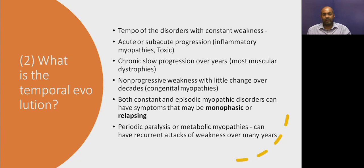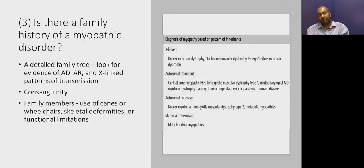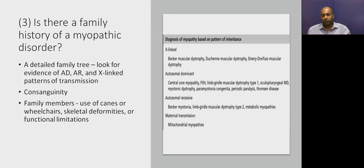Muscle disorders can have monophasic or relapsing symptoms. Patients with periodic paralysis and metabolic myopathies classically have recurrent attacks of weakness over many years. The third key question is: is there a family history of a myopathic disorder? We need a detailed three-generation family tree to identify any involved family members and determine whether the pattern is dominant, recessive, or X-linked. We should ask about consanguinity. Rather than asking directly about muscle disease, it may be more informative to ask whether family members use canes or wheelchairs, have skeletal deformities, or have functional limitations.